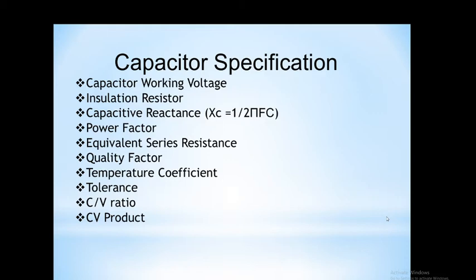When AC voltage is applied, the peak value of AC voltage should be compared to the DC working voltage rating of the capacitor. The peak-to-peak value of the applied voltage is found, and the peak value should not exceed the DC working voltage. For example, if the applied voltage is 40 volts peak to peak, then the peak value is 20 volts, and the DC working voltage rating of the capacitor should be minimum 20 volts.